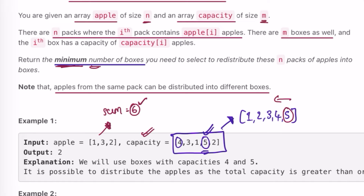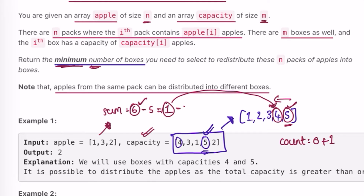We have six apples to fit into the minimum number of boxes. We track a variable count, initially zero. We pick the largest box with capacity five — since we have six apples, we use it and increment count to one, then subtract five from the total, leaving one apple. We pick the next box with capacity four and subtract four, giving minus three. Once the sum is less than or equal to zero, we stop. We used two boxes, so count is two.